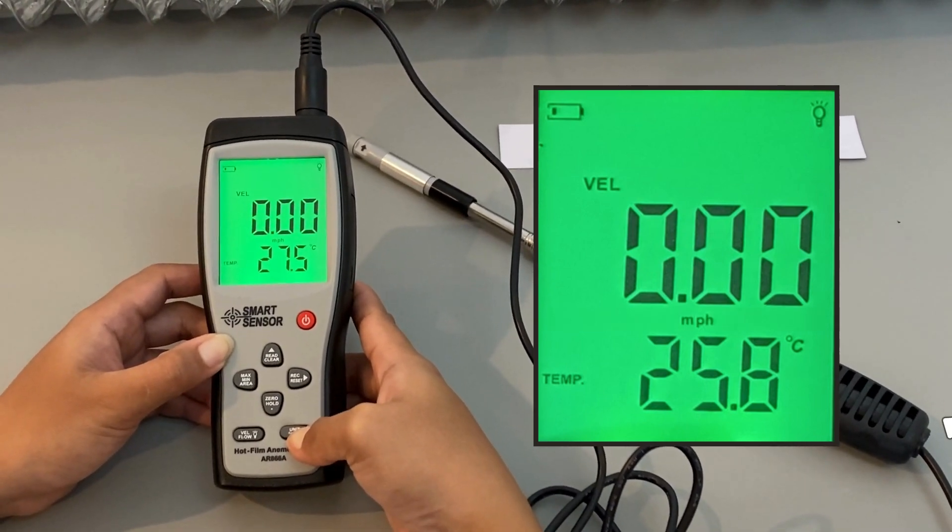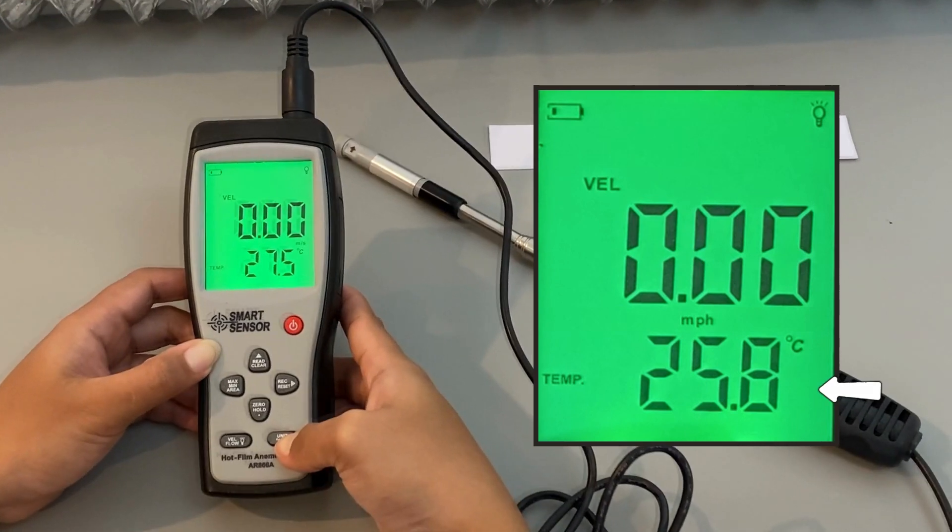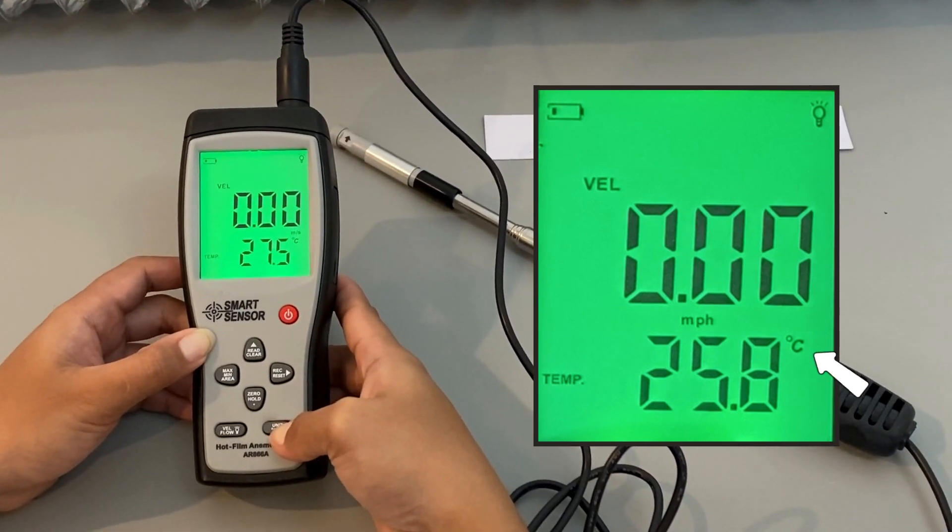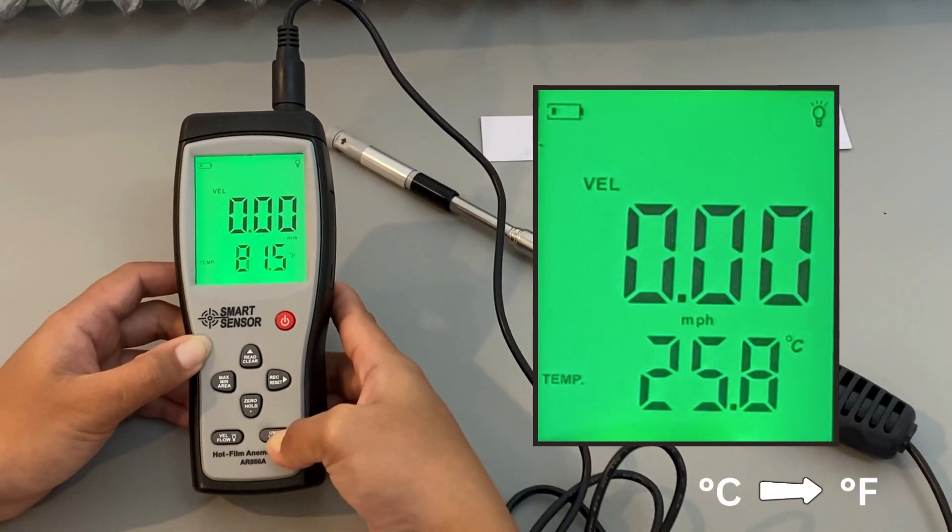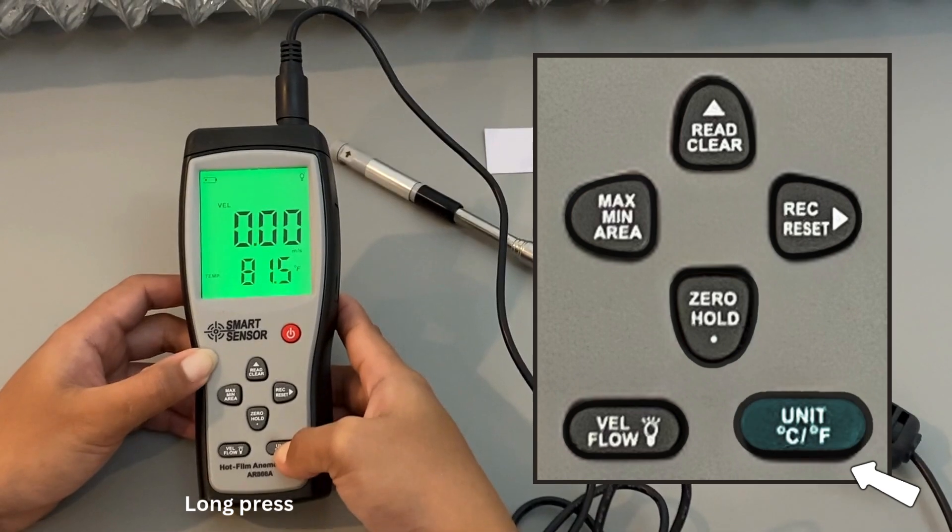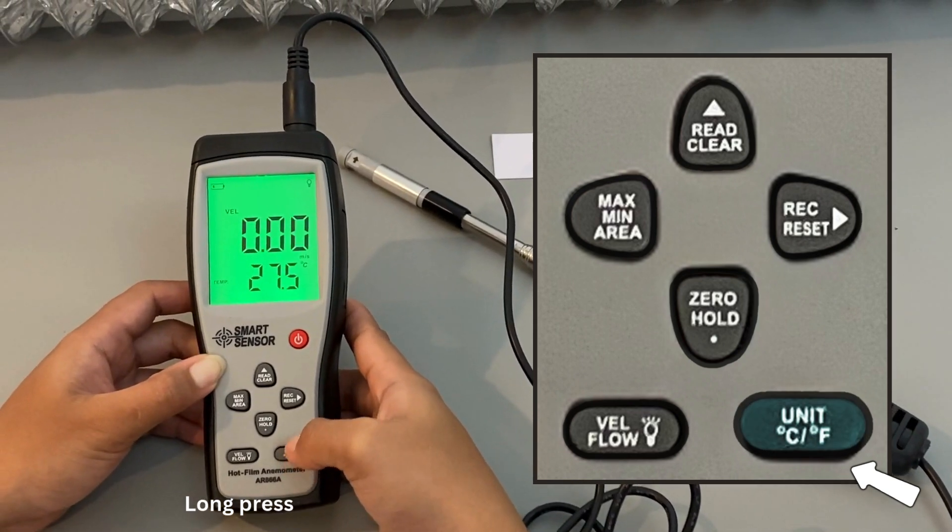Under the velocity display, you'll also see the temperature unit. To switch between Celsius and Fahrenheit, long-press the unit button. By default, it's set to Celsius.